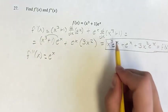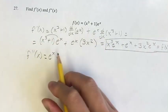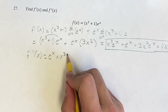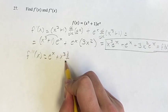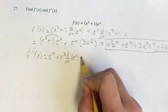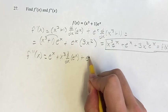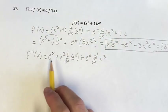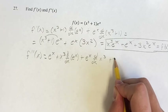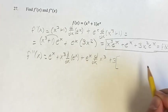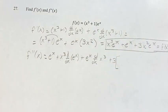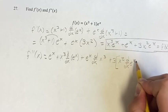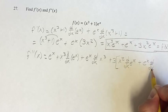So similar thing here: for this term, the first term times the derivative of the second term, plus the second term times the derivative of the first term. So that's these two knocked out, plus 3 times the derivative of x squared e to the x. So you take x squared, the first term, times the derivative of the second term, plus the second term times the derivative of the first term.